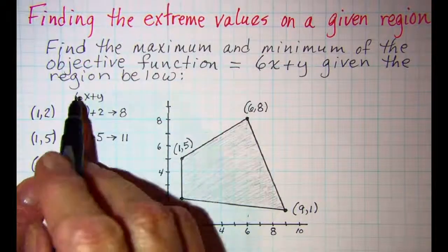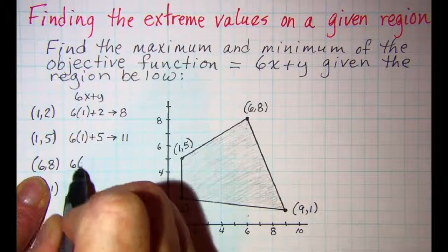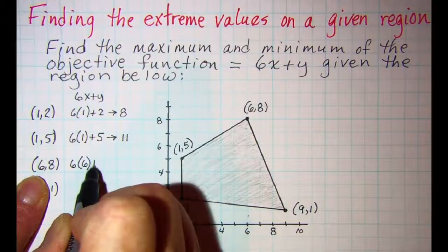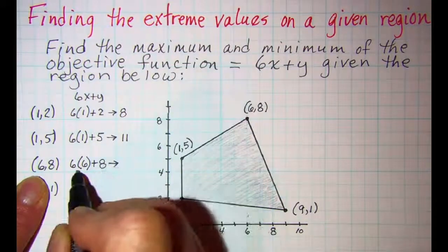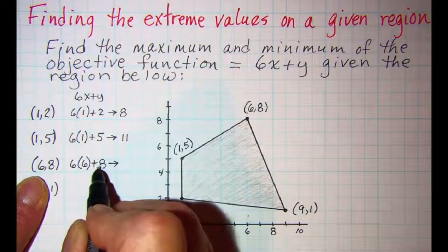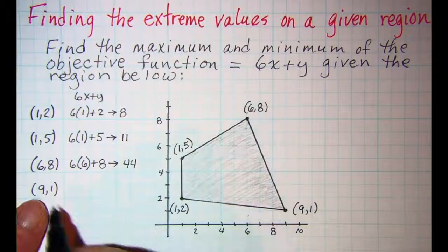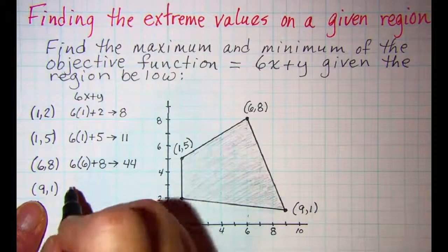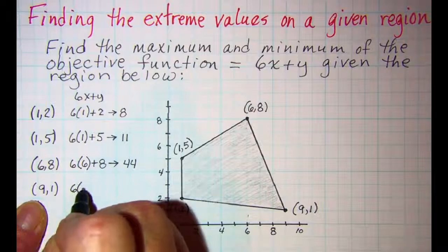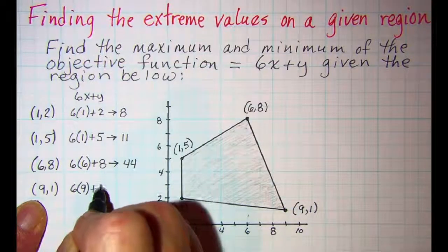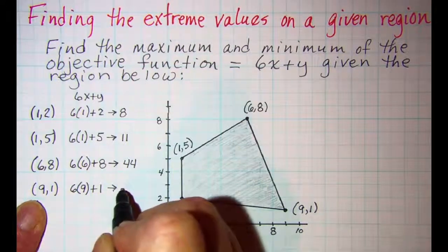For the next point I have 6 times the x value plus the y value. For the point 6, 8 that gives 6 times 6 plus 8, and then for point 9, 1 I have 6 times 9 plus 1, which is 54 plus 1, giving 55.